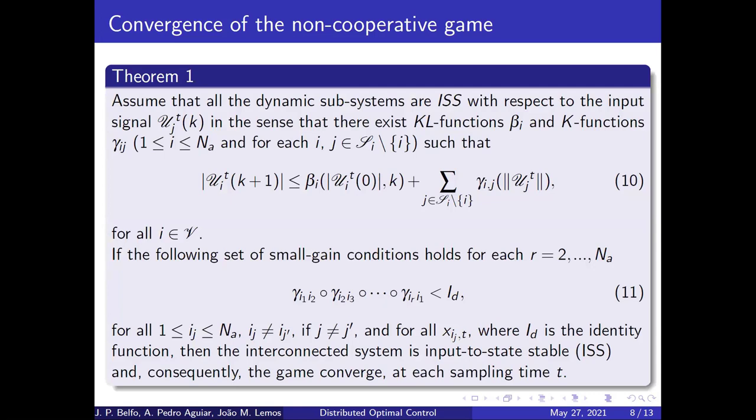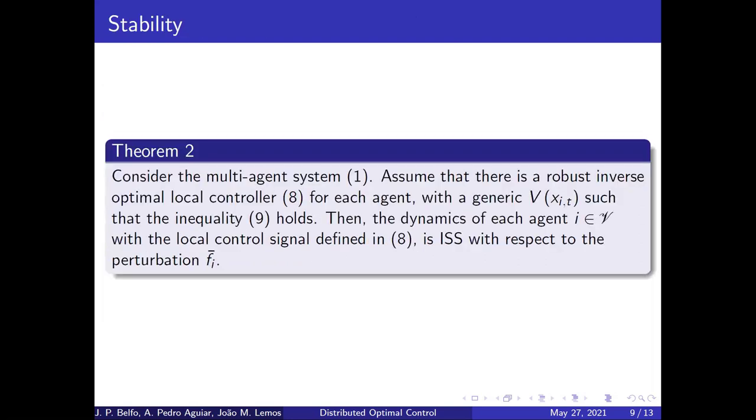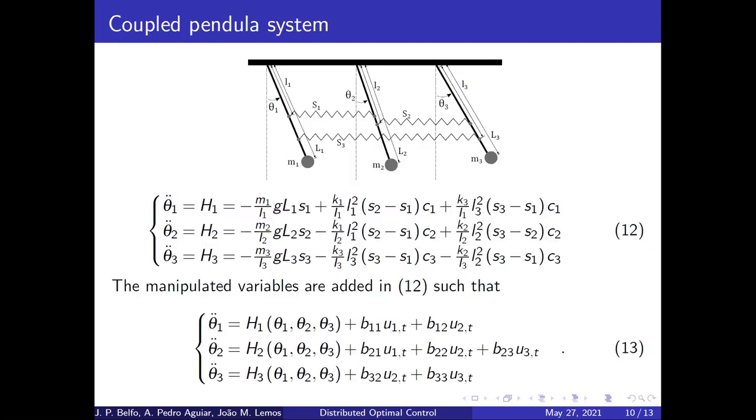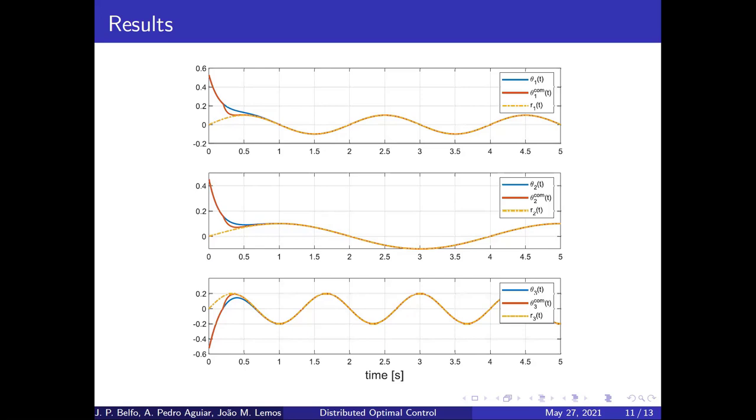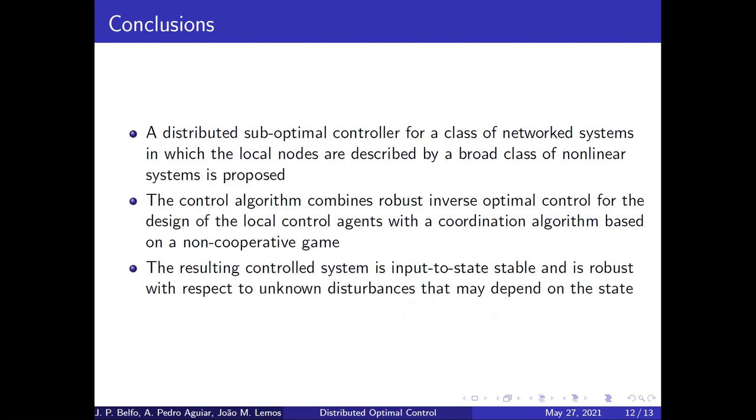The second contribution is theorem 2, that states that, if we consider a generic V that satisfies the conditions in definition 1, then the overall system is input to state stable with respect to the perturbation f_i_bar. Applying this theory to a coupled pendulum system defined in this slide, in which pendulum 1 is perturbed by pendulum 3 and vice versa, it is possible to see that the objective of tracking a reference for each pendulum was fulfilled with the robust inverse optimal control obtained. To conclude, a distributed sub-optimal controller is proposed. The control algorithm combines robust inverse optimal control with non-cooperative game, and the resulting controlled system is input to state stable, and is robust with respect to unknown disturbances that may depend on the state. Thank you very much.